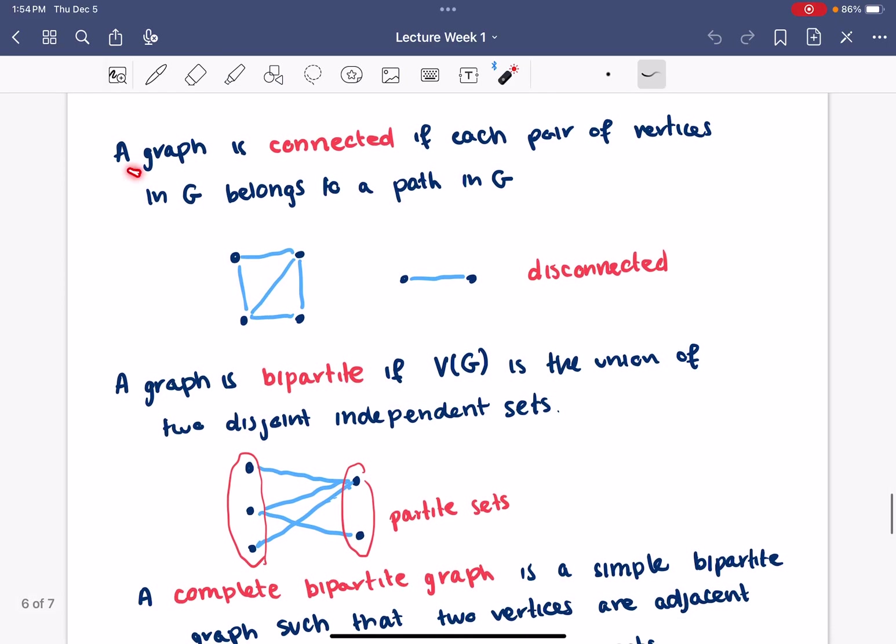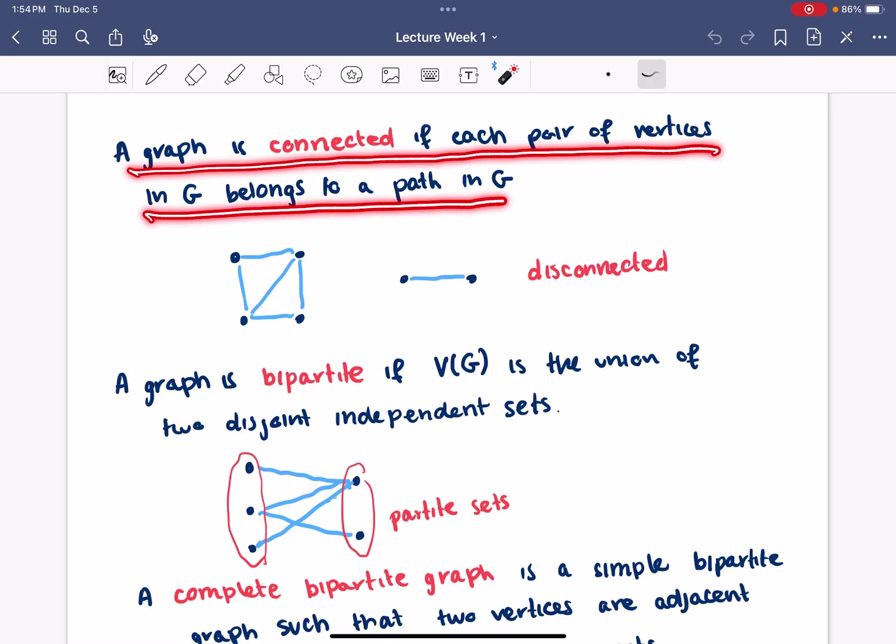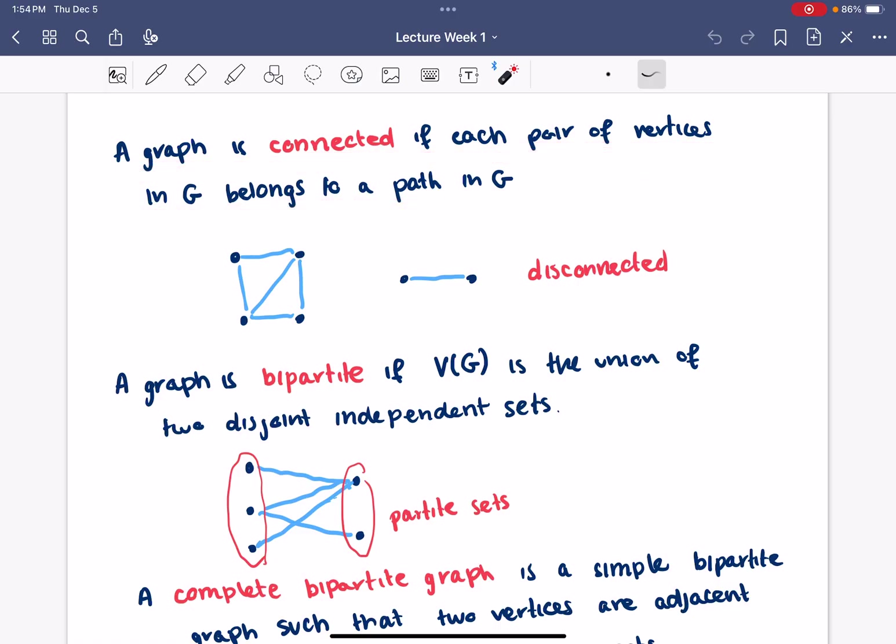We say a graph is connected if each pair of vertices in G belongs to a path in G. So, if I pick out any two vertices, there is a path between them. Otherwise, we would say the graph is disconnected.